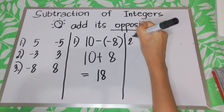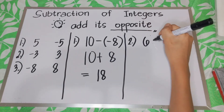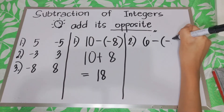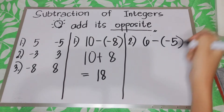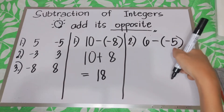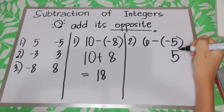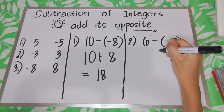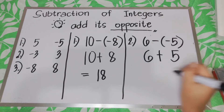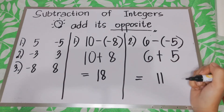Another example: 6 minus negative 5. So what is the opposite of negative 5? We have positive 5. So again, you need to add it. Therefore, the answer will be 11.